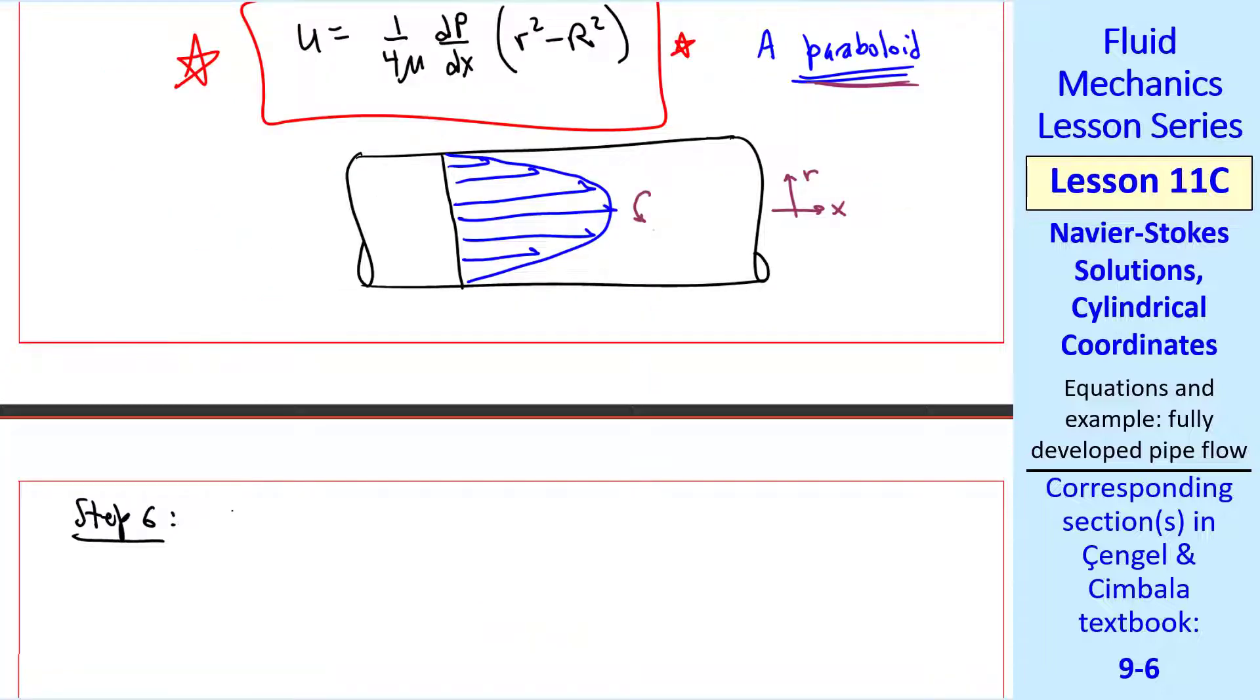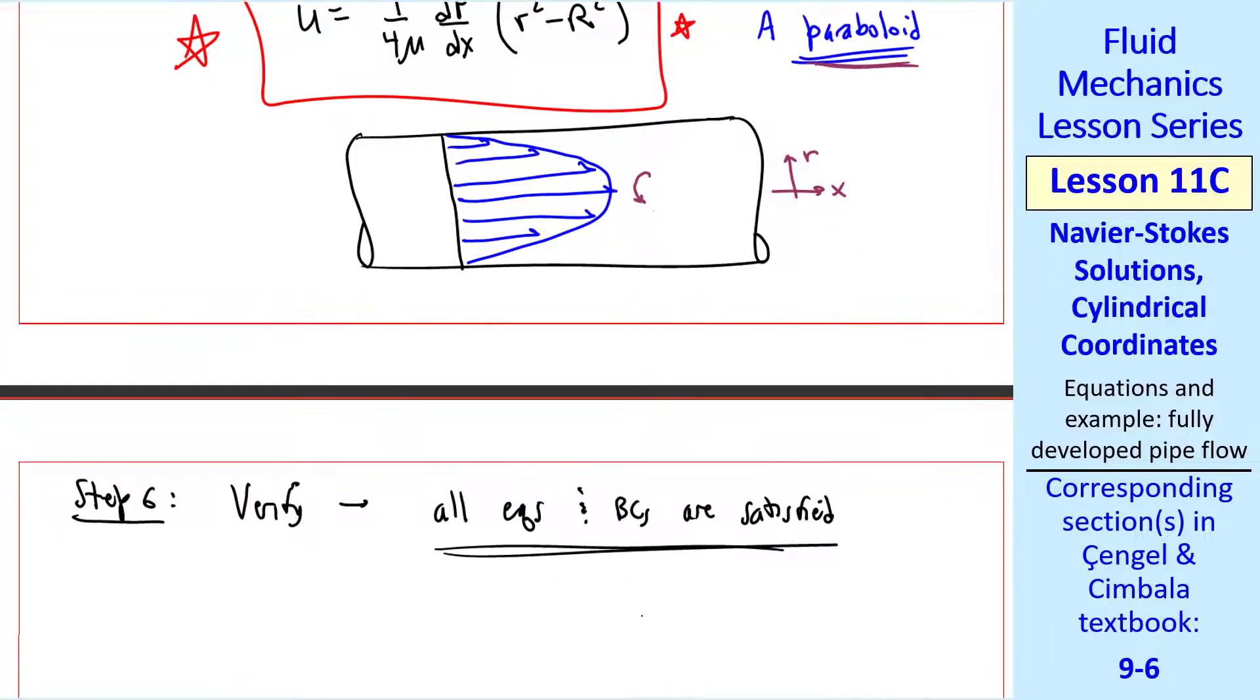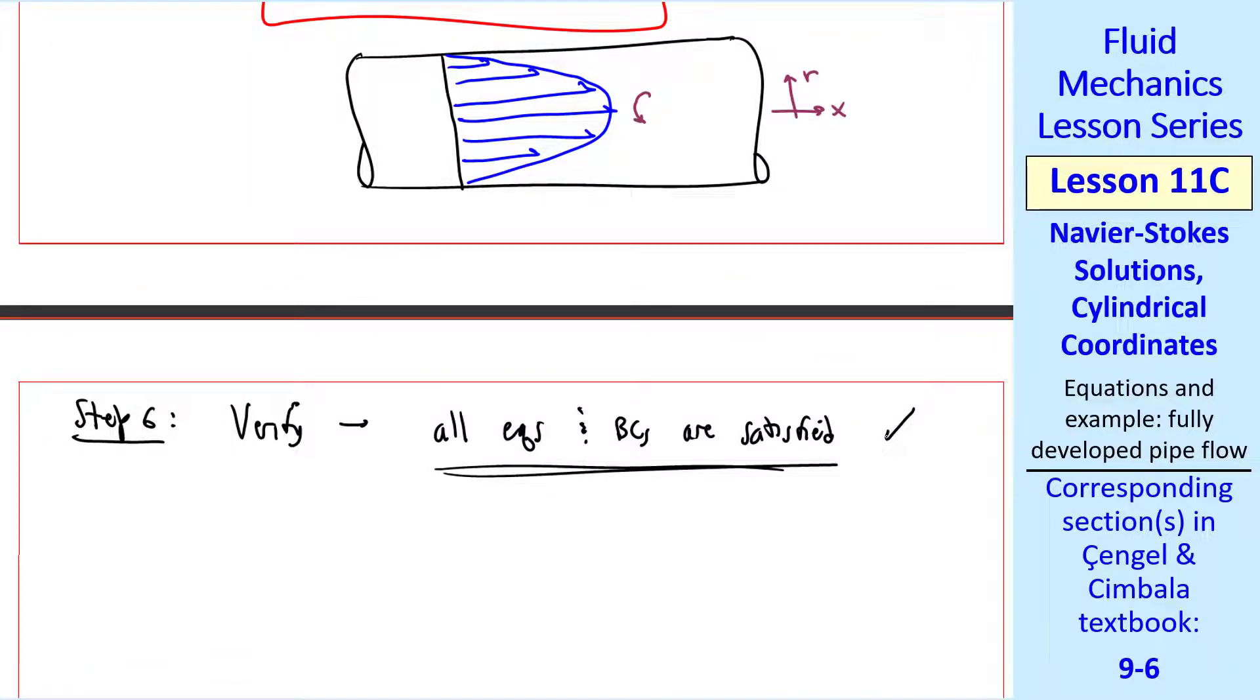Step 6 is to verify the results. I'll leave it to the viewer to do this on your own. Namely, we can verify that all the equations and boundary conditions are satisfied. So this is a valid solution.